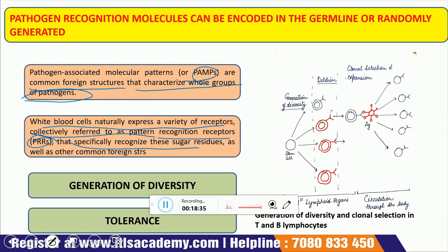Because pathogens generally have much shorter life cycles than their vertebrate hosts and some utilize error-prone DNA polymerases to replicate their genome, pathogens can evolve rapidly to evade host-encoded recognition systems. A strategy called generation of diversity is employed by developing B and T lymphocytes, resulting in a population with the theoretical potential to respond to any antigen that may come along.